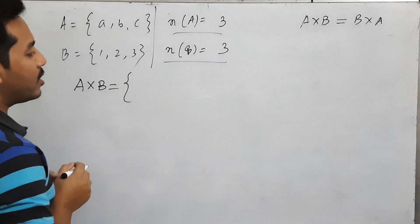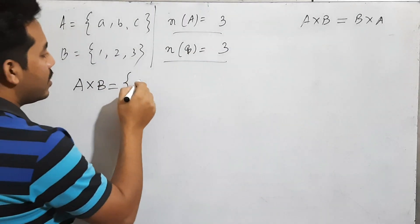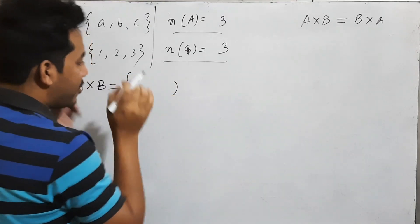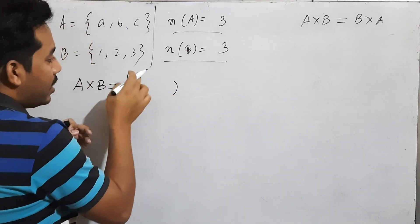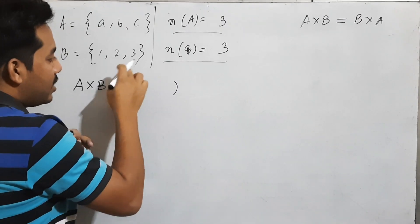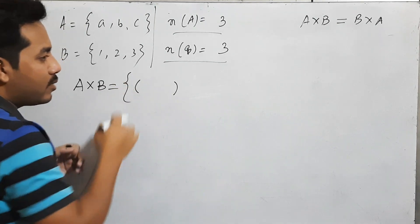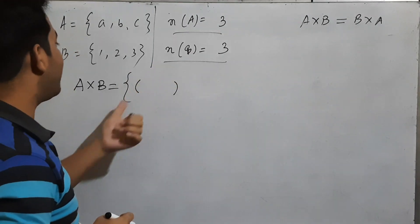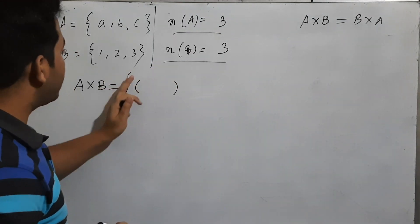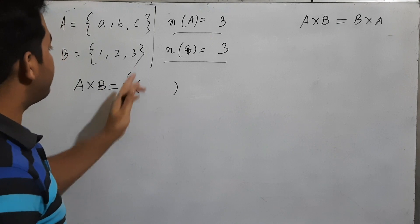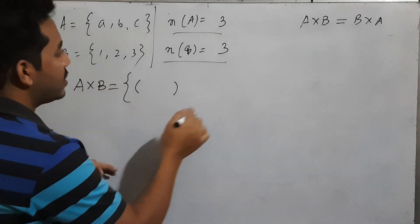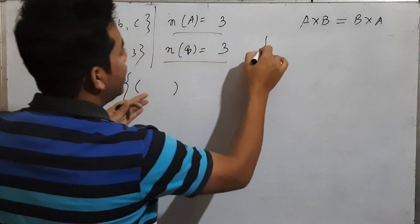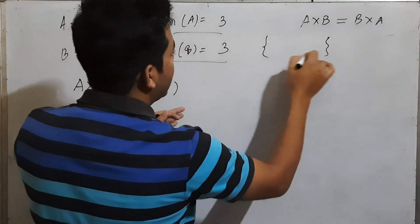There is an element. How many elements are there? This is the bracket. We call A.